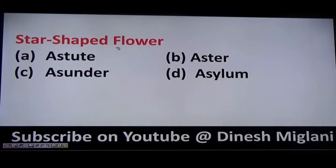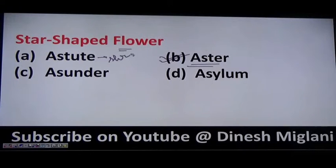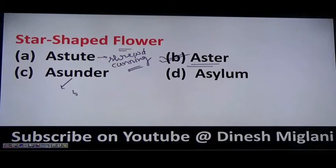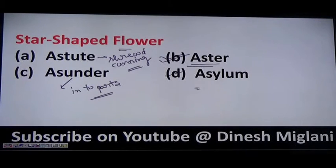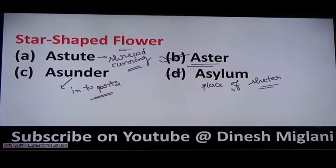A star-shaped flower is called aster (A-S-T-E-R). Astute means one who is very shrewd or cunning. Asunder means into parts. Asylum is basically a place of refuge or shelter — a place of protection.